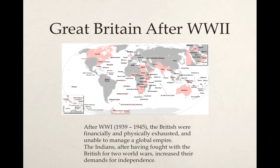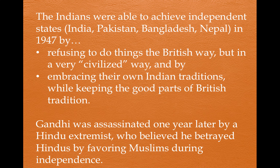Here you can see every country in red that was under control of the British government at some point. The Indian people, after having fought for the British for two world wars, began to increase their demands for independence. And really two years later, the Indians were able to achieve this independence. They did this by refusing to do things the British way — but refusing in a civilized, nonviolent, non-cooperative way.